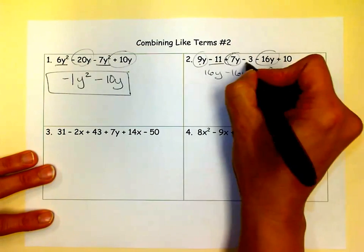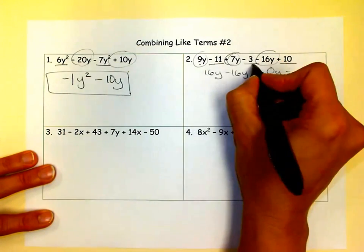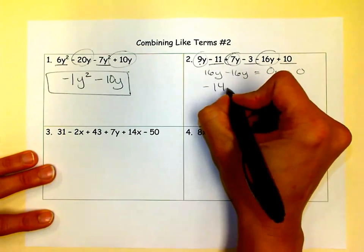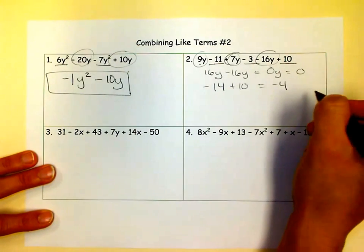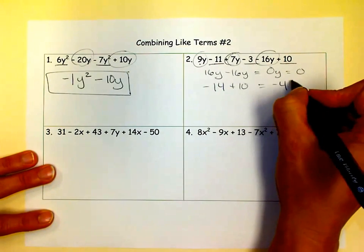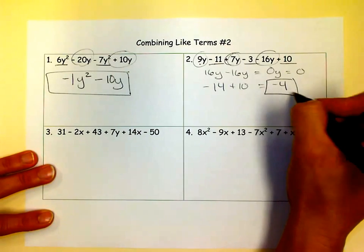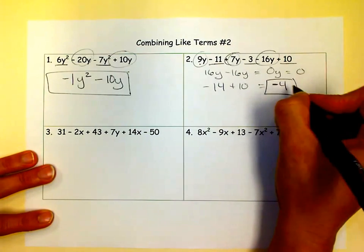So let's look at the numbers next. We have negative 11 minus 3, which gets negative 14. And then when we add 10, we get a negative 4. And so since this was 0, this is our answer. Because 0 plus negative 4 is negative 4.